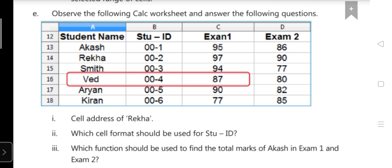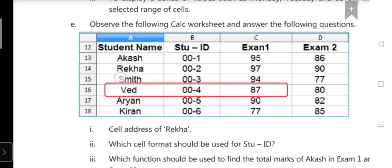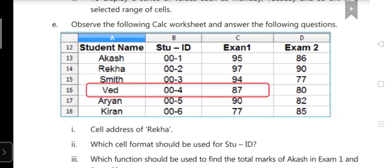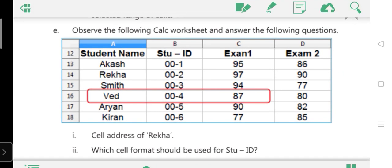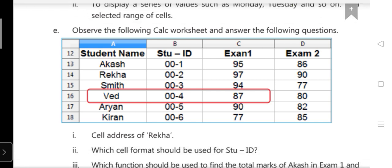Now E: Observe the following Calc worksheet and answer the following questions. There is one table given to you. Please change the spelling of exam 1. There is by mistake N is written there. Cell address of Rekha. Here we have to find for Rekha. Cell address of Rekha. It's A14. Answer is A14.